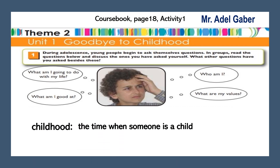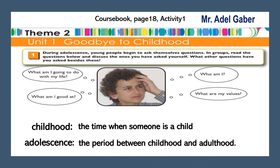Childhood is the time when someone is a child. Look at this picture. Do you think this boy is a child or an adolescent? Yes, he is an adolescent. Adolescence is the period between childhood and adulthood. It is a time when young people start to question themselves and the world around them. They start looking at themselves in a new way, searching for their identity and answers to big questions: What am I going to do with my life? Who am I? What am I good at? What are my values?